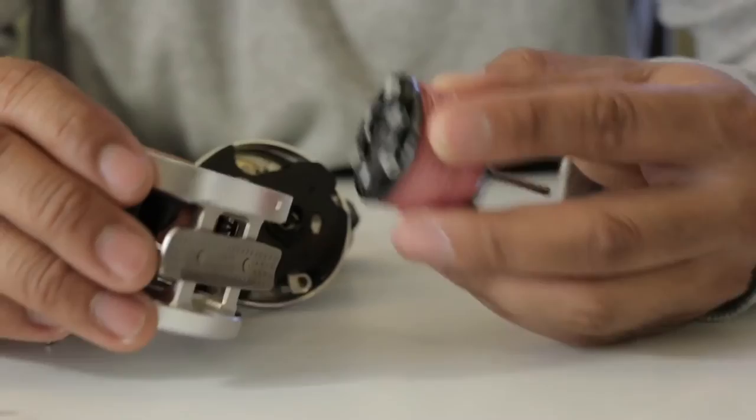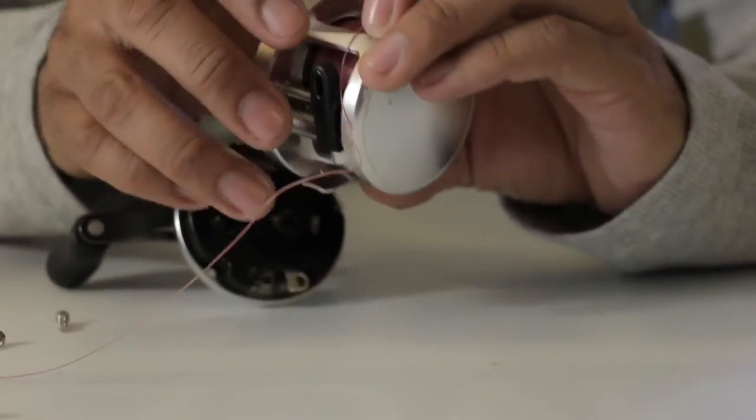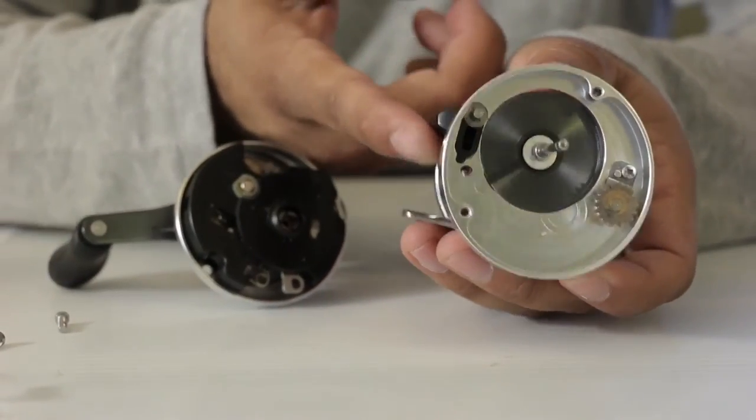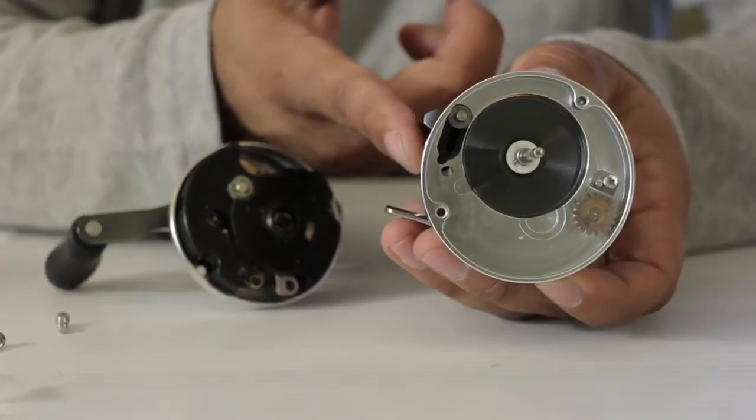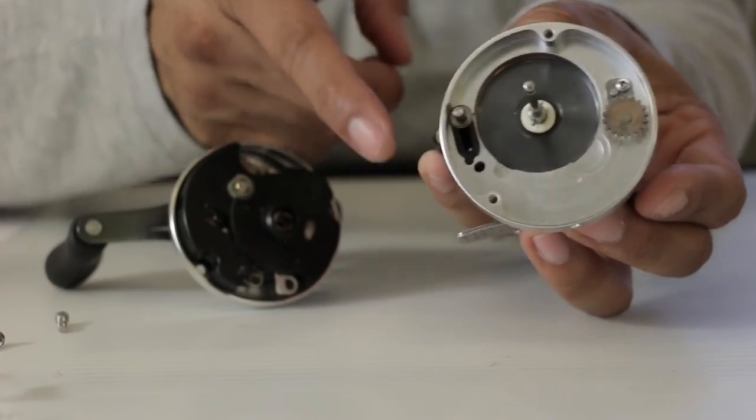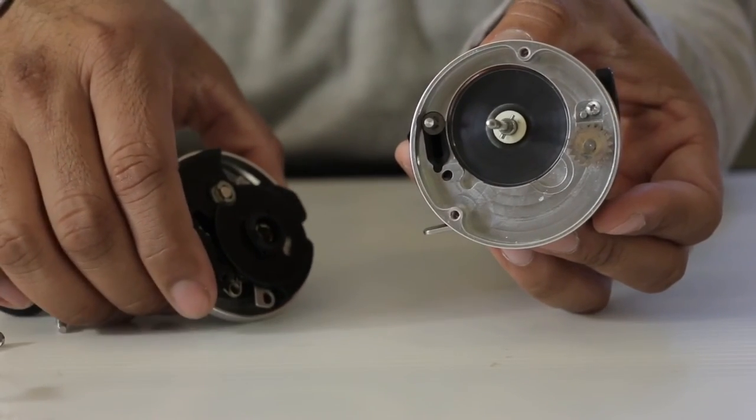I will put my spool back into the reel. What you want to do is make sure your thumb bar here is in the up position all the time. When you're putting your reel back together, keep it in the up position.